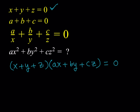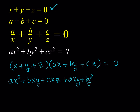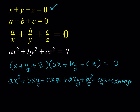Distributing the x gives us ax squared plus bxy plus cxz, and then distributing y gives us axy plus by squared plus cyz, and finally distributing z gives us axz plus byz plus cz squared.